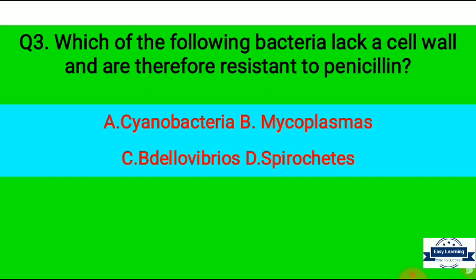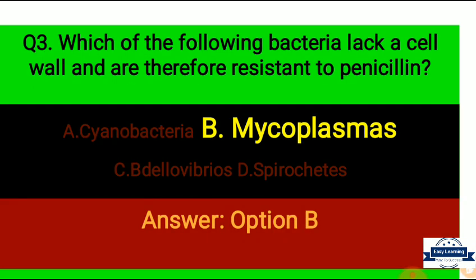Question 3: Which of the following bacteria lack a cell wall and are therefore resistant to penicillin? Option A: Cyanobacteria, Option B: Mycoplasma, Option C: Bdellovibrio, Option D: Spirochete. Correct answer is Option B, Mycoplasma.